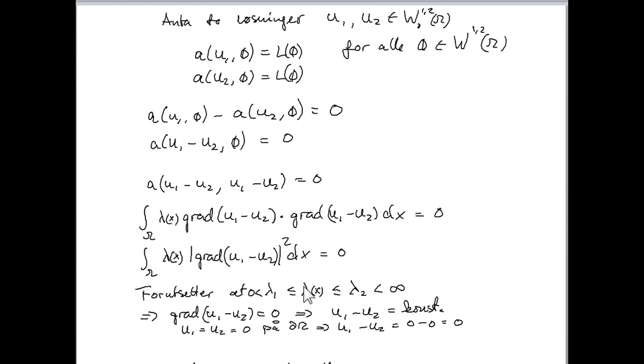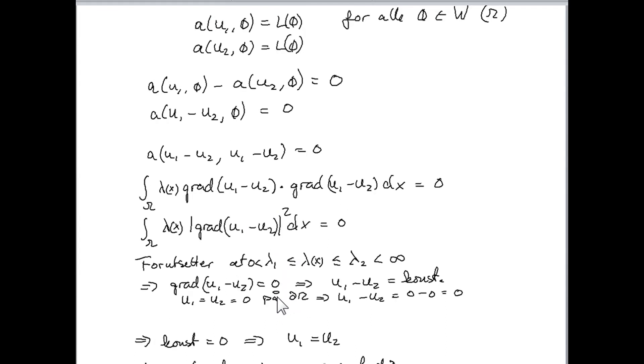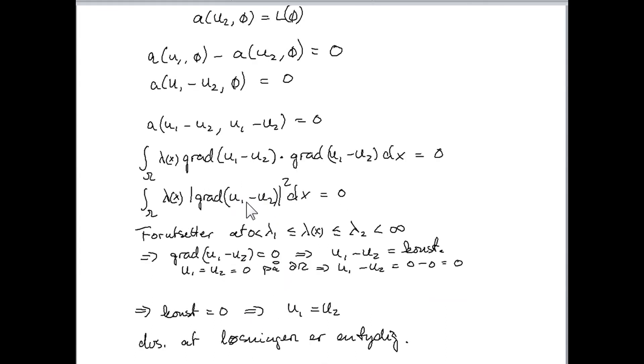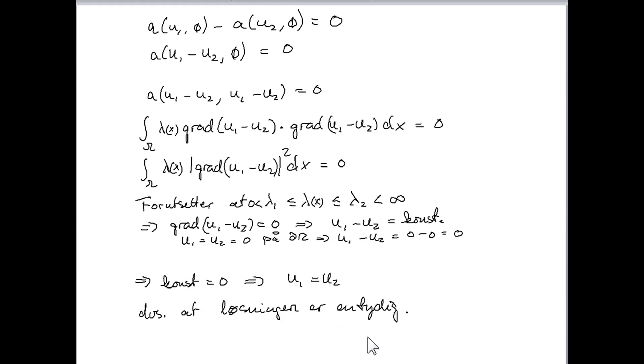Lambda is assumed to be a positive function, strictly positive function. So we therefore conclude that the integral, the integrand here, and particularly the square of the gradient of u_1 minus u_2, must be equal to 0. And when the gradient is equal to 0, then we must have a... Then this argument must be constant. And when it's constant, then u_1 minus u_2 is a constant. And this means that u_1 must be equal to u_2, due to the fact that u_1 and u_2 are equal to 0 on the boundary. So this gives that we have a unique solution. u_1 must be equal to u_2. That's the definition of a unique solution.